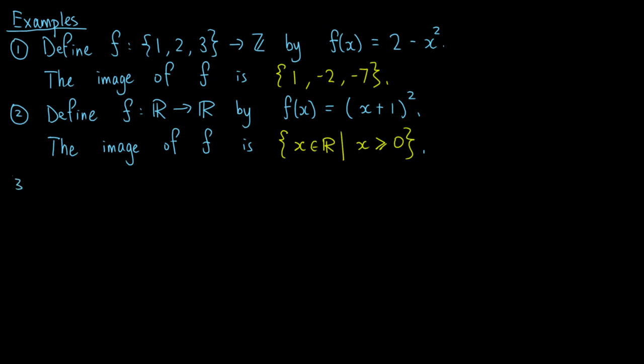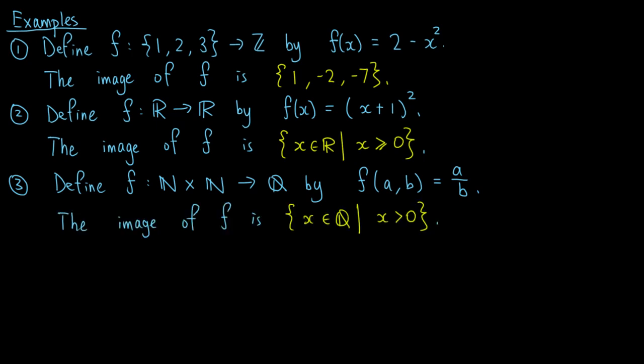Thirdly, we define the function f from the Cartesian product of the natural numbers in itself to the set of rational numbers by f of a, b equals a over b. The image of f is the set of rational numbers x such that x is positive.